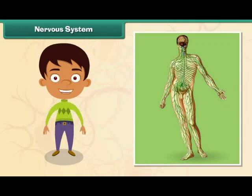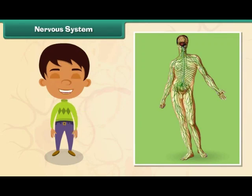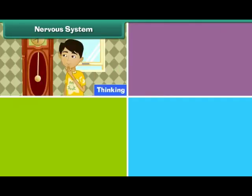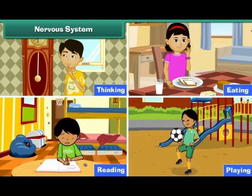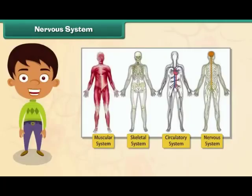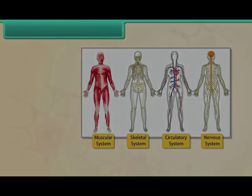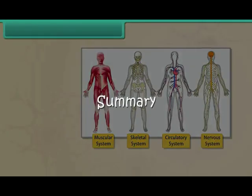Nervous system: The human nervous system consists of the brain and nerves. It controls all physical and mental human activities such as thinking, eating, reading, and playing. All the other organ systems and their functions are controlled by the nervous system.